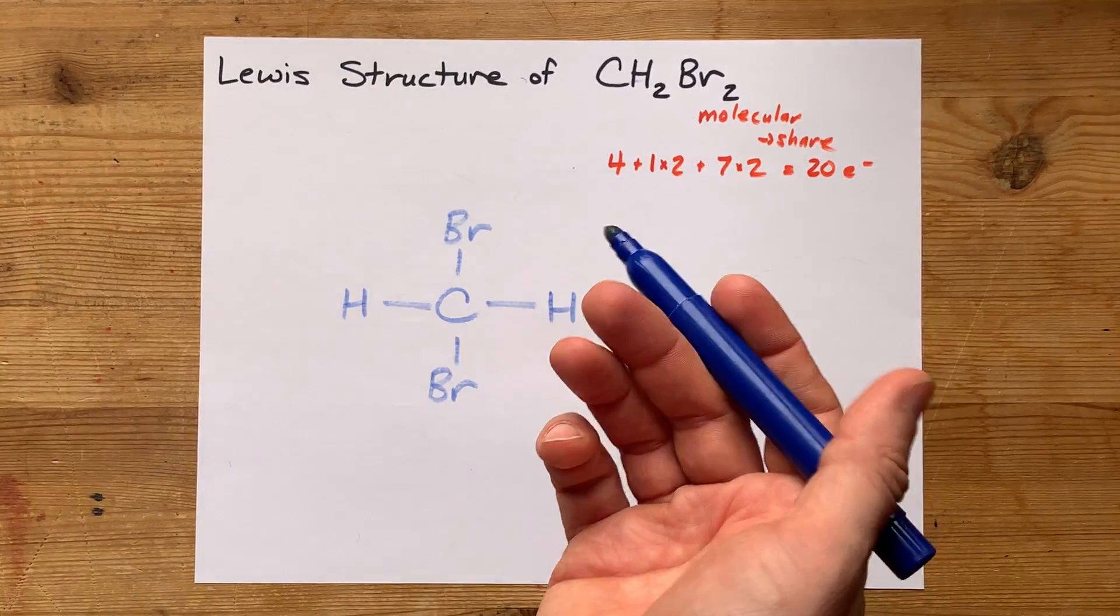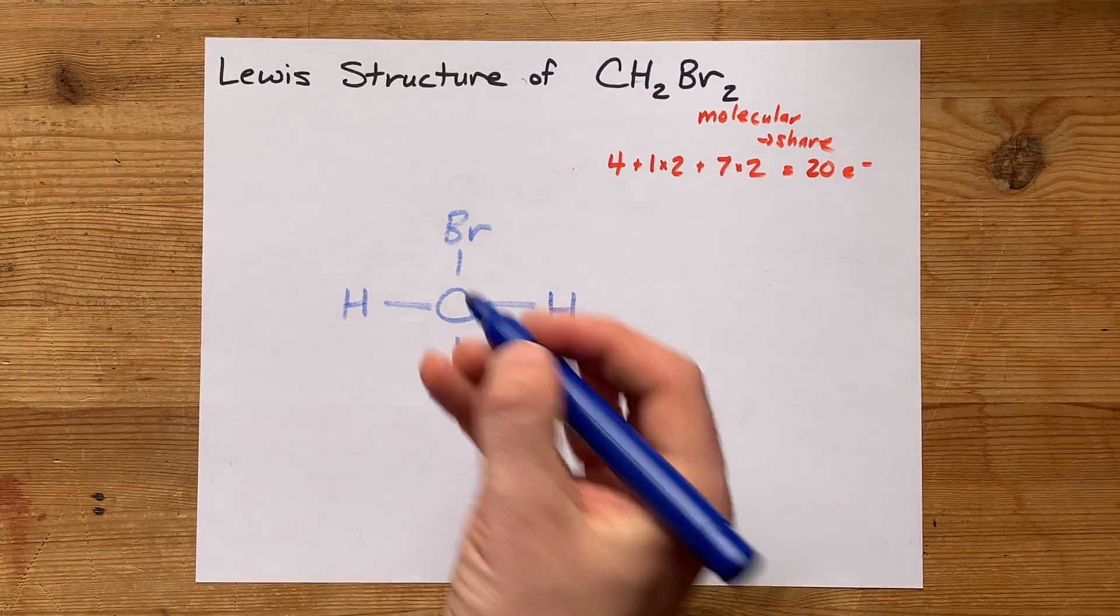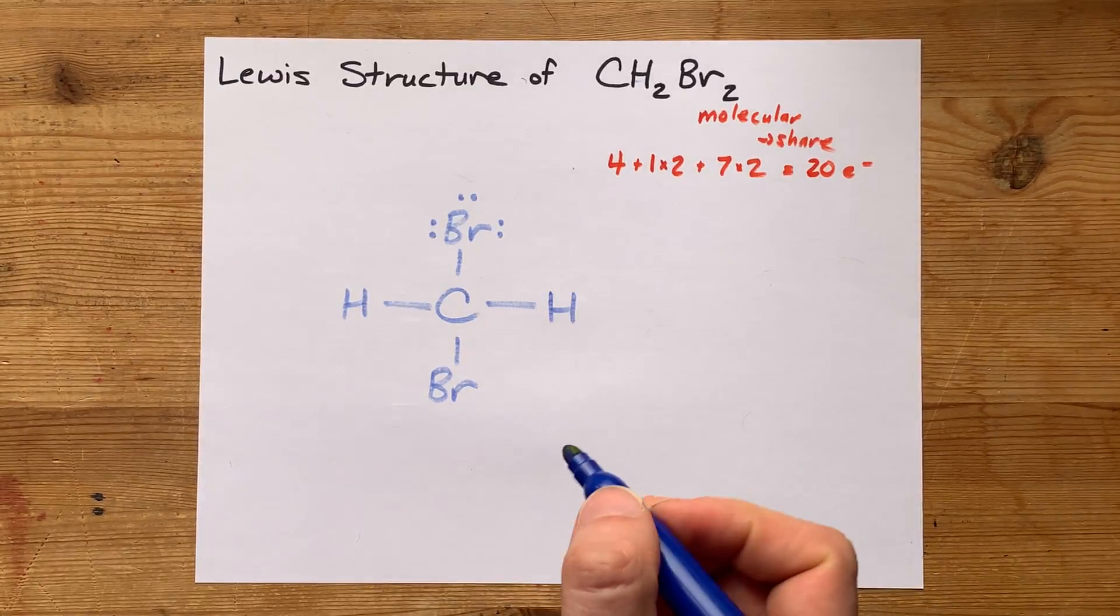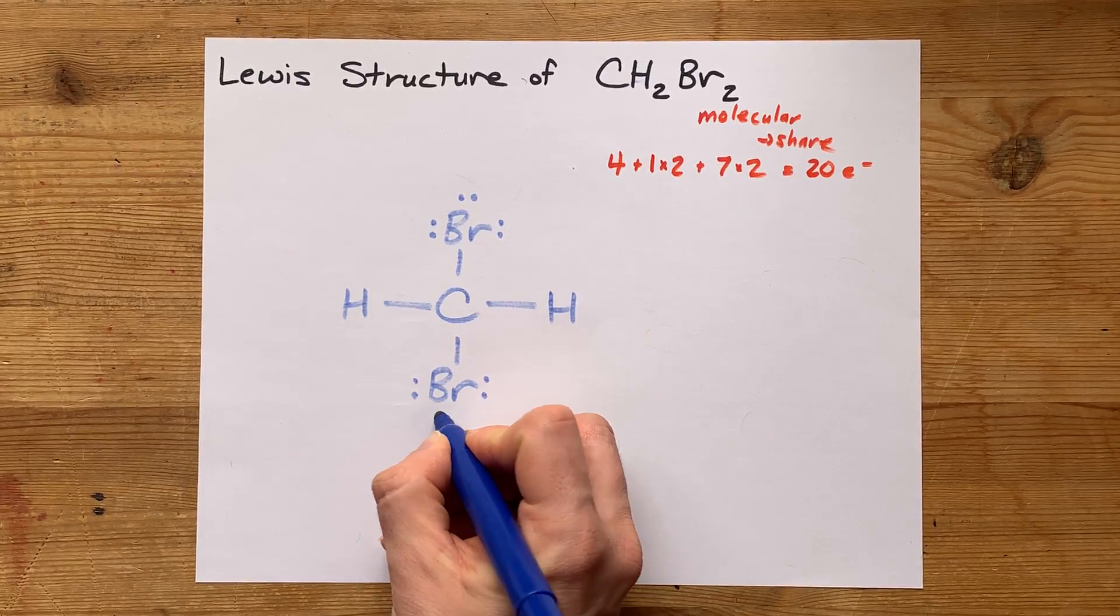But the bromines need to follow the octet rule here. I have 8 electrons total. Here's 9, 10, 11, 12, 13, 14, and then 15, 16, 17, 18, 19, 20.